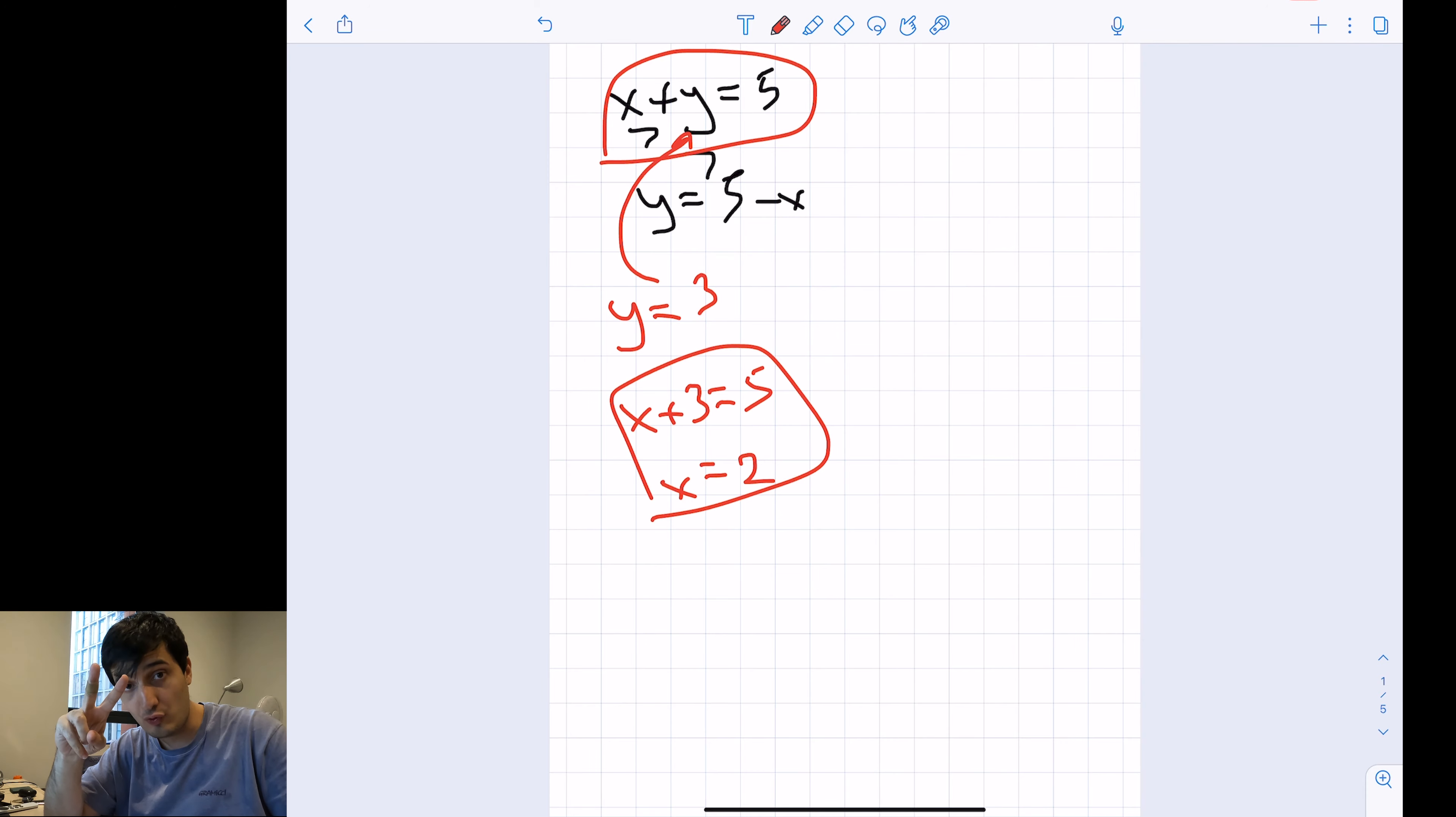If you have two unknowns, you must have two equations. If I give you x plus y equals 5 and z equals 3, it won't work because now you have two equations but three unknowns. Keep this in mind: unknowns must equal the number of equations you have, otherwise it is unsolvable.